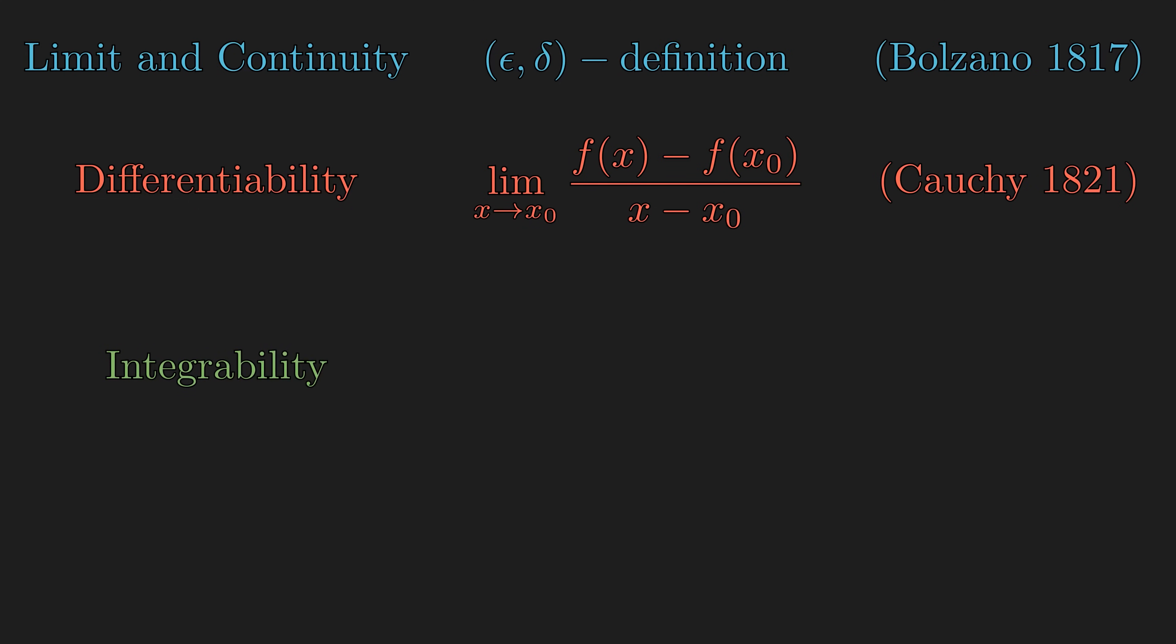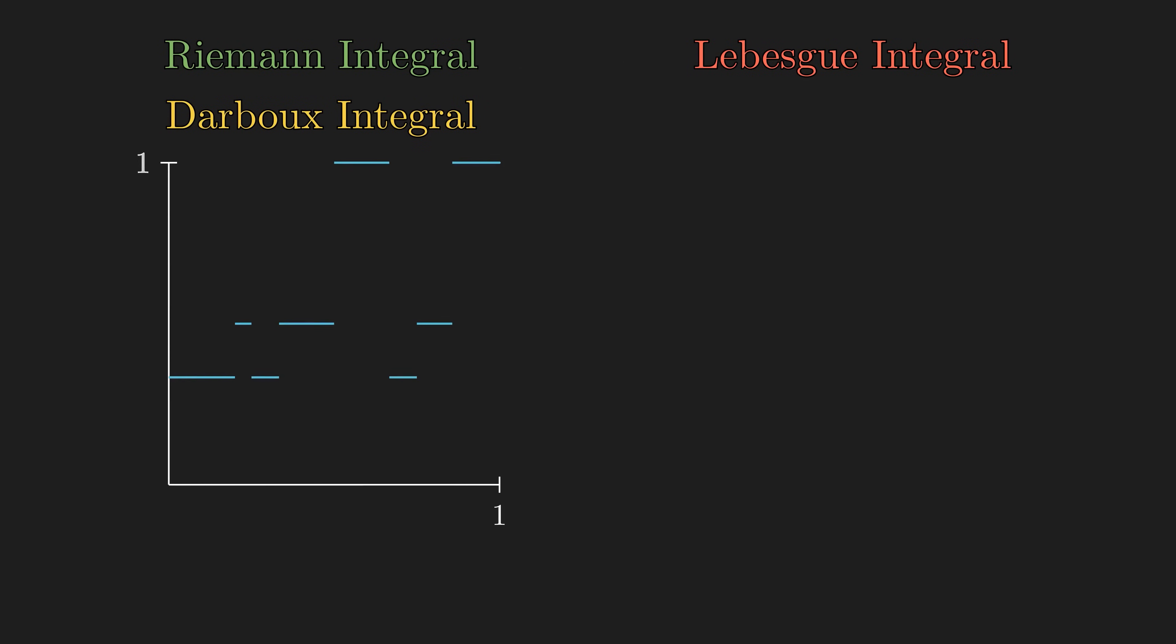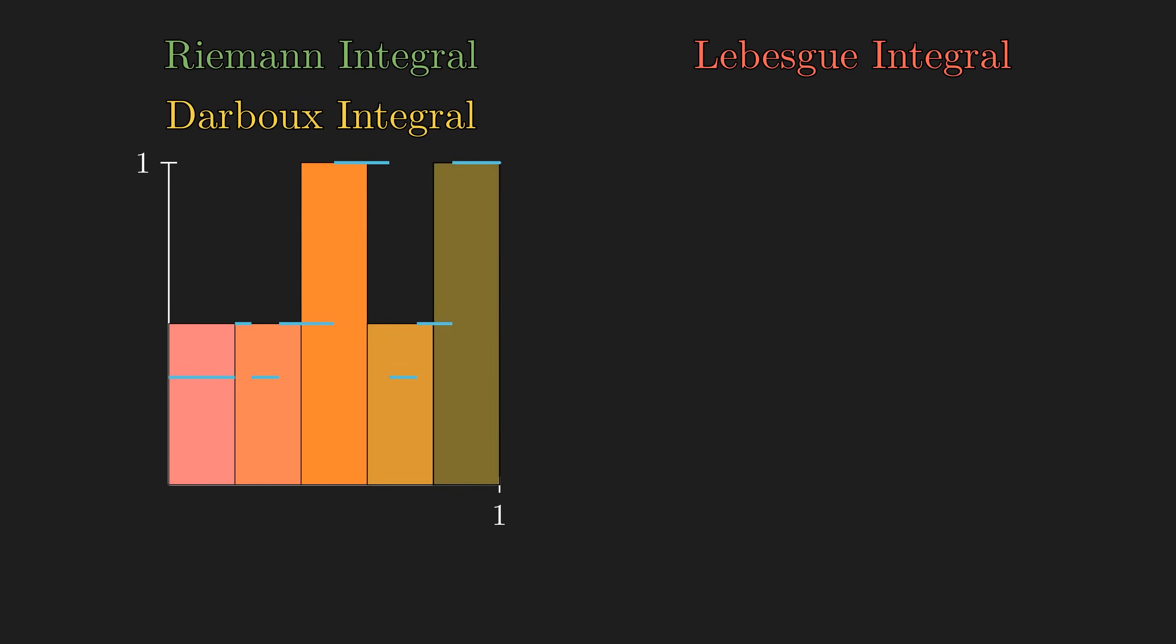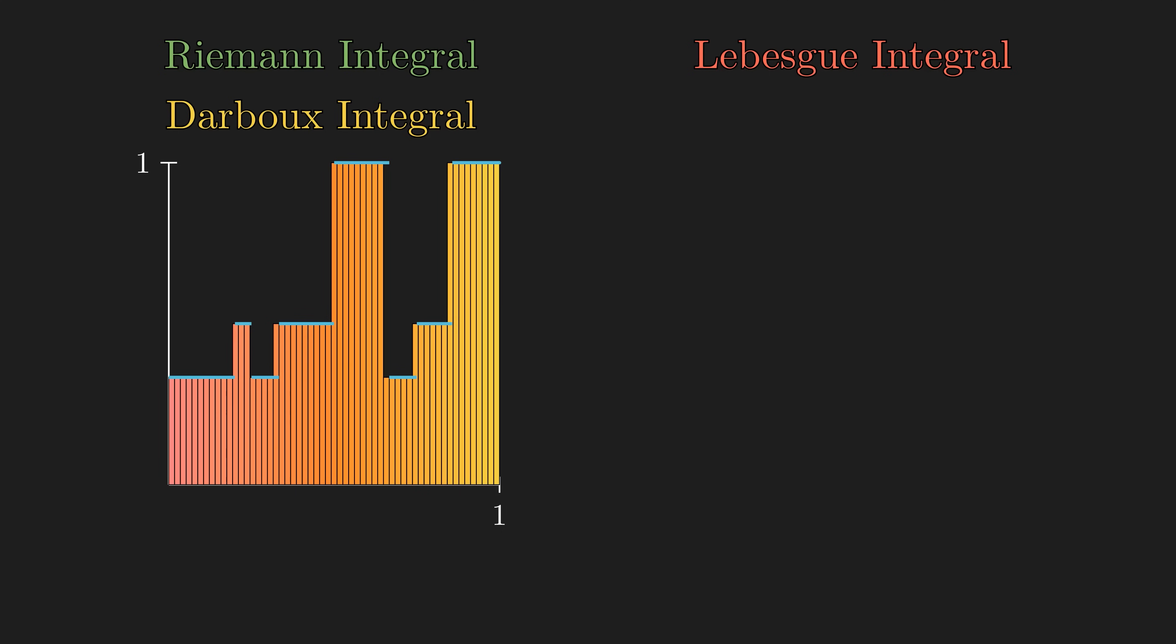The first formal definition of the integral was invented about half a century later by Riemann. Then soon after, Darboux came up with his own version. Then Lebesgue came up with a completely new way to define the integral. The Riemann and Darboux integrals are two distinct, rigorous definitions of an idea originally invented by Newton and Leibniz, which is to approximate the area under a curve by dividing the region into rectangles and progressively reducing the width of each rectangle.